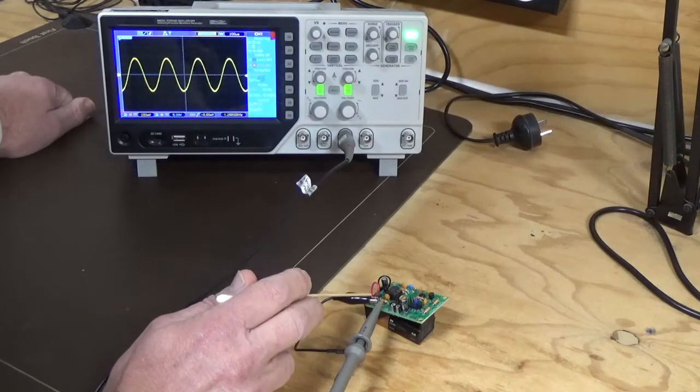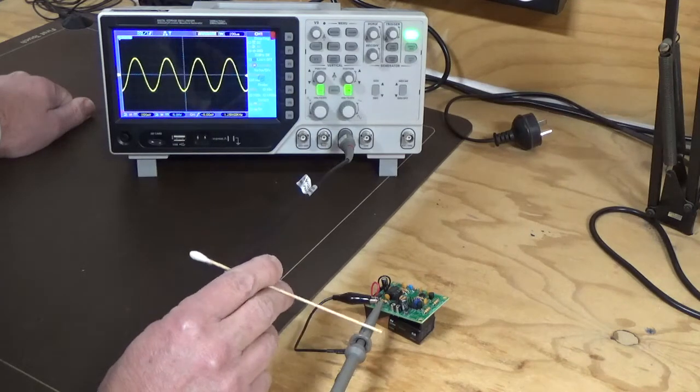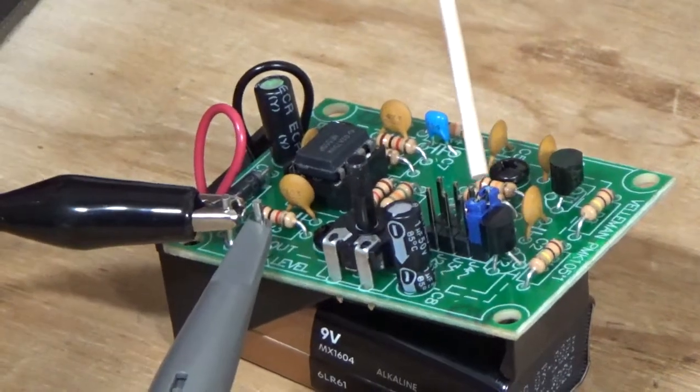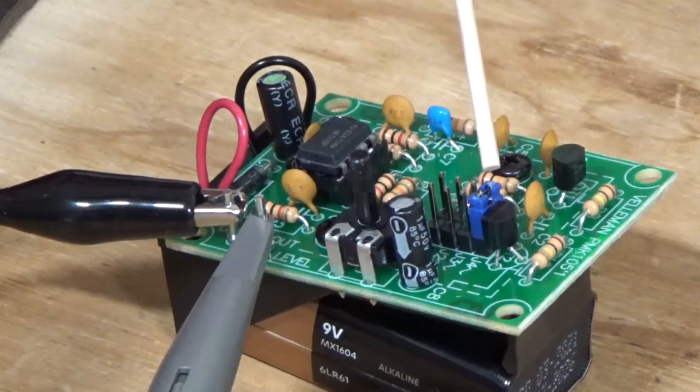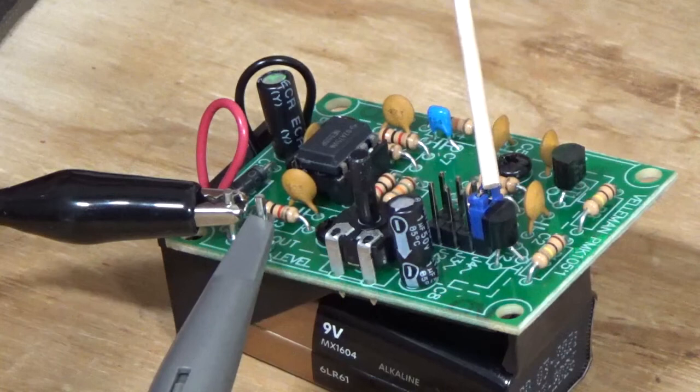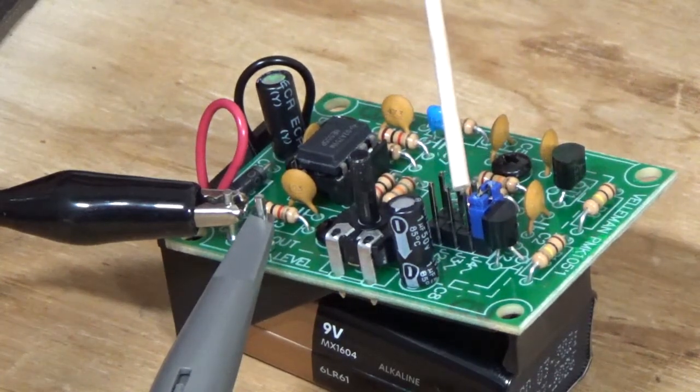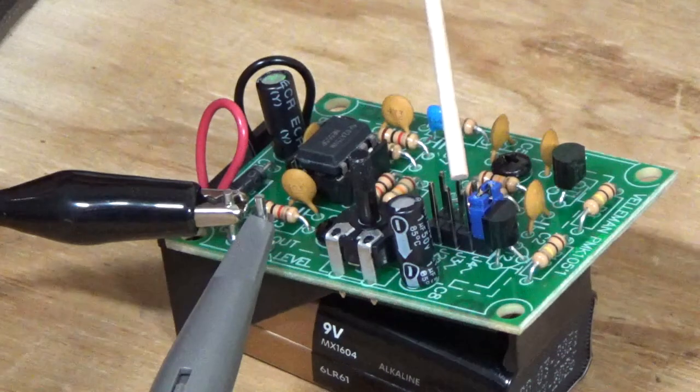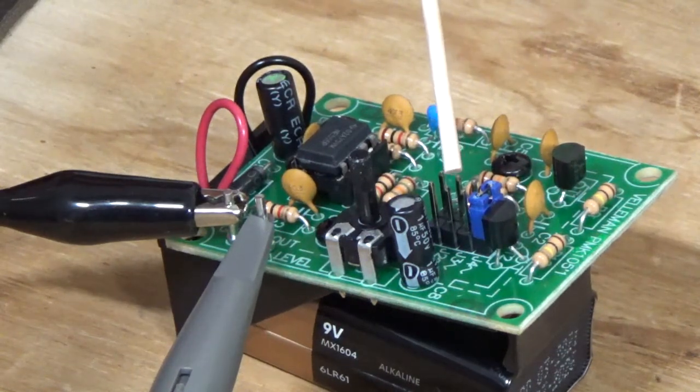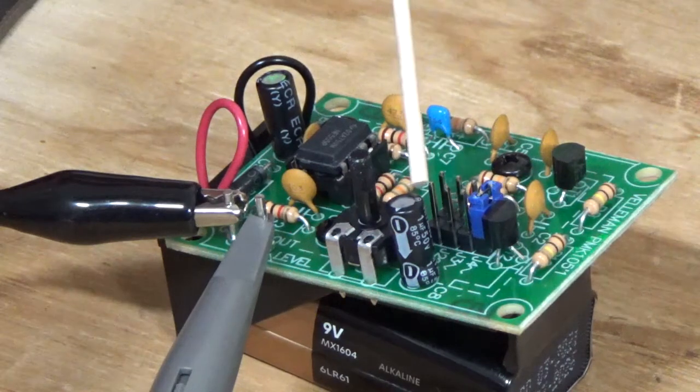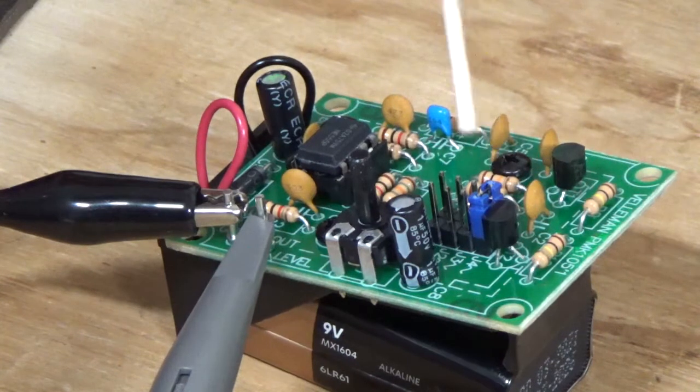So as you can see the output is here, we've got our ground connection on and the probe's on times one. So as you can see here we've got the jumpers. There's four positions as you can see. At the moment we've got it set on sine wave. The next one under that is sawtooth or triangular I should say. And the next one under that is the integrated waveform. And the bottom one here is the square wave. And we'll have a look at each one of those.